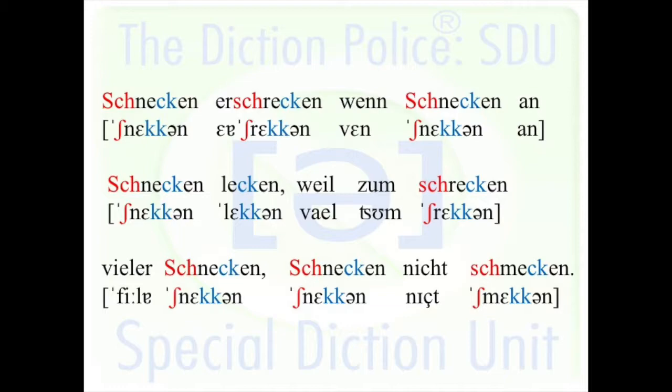So here you also change from the very front to the back — from the S-C-H, Sch, and then the K: Schnecken, erschrecken. And you have the rolled R in there, and also the upside down letter A. So if you take the word erschrecken, at the beginning you have the prefix er — here the R is the upside down A — er, and then you have the schrecken, where it's a rolled R when you sing it.